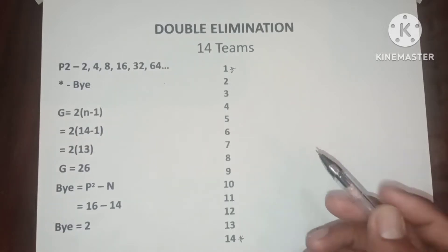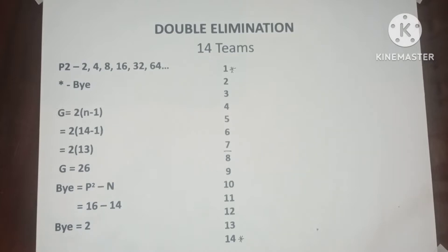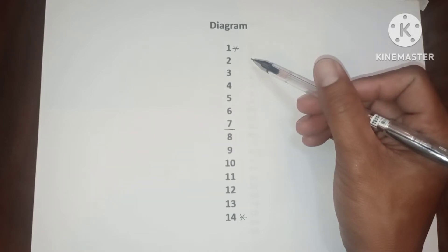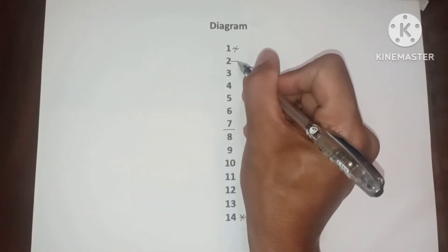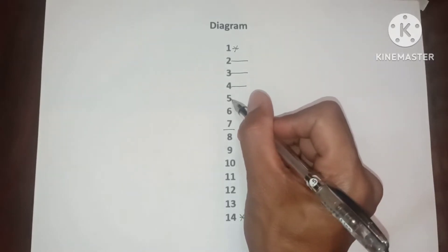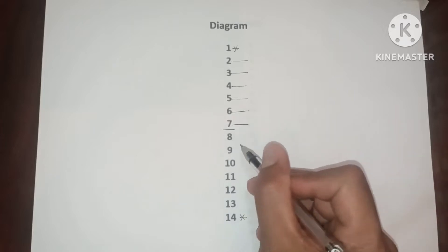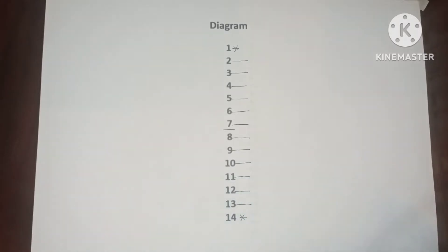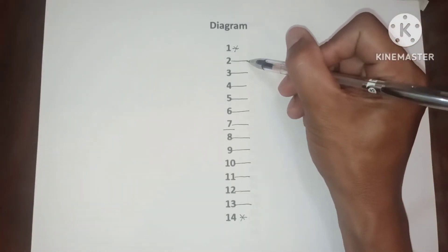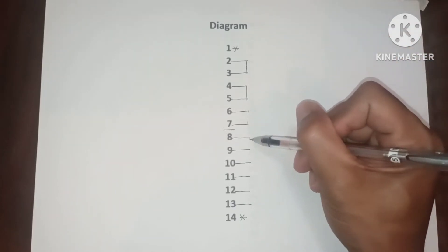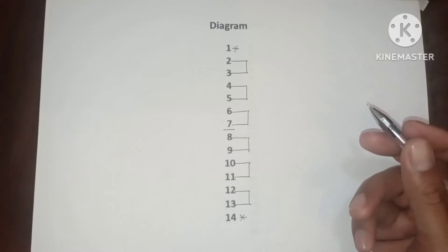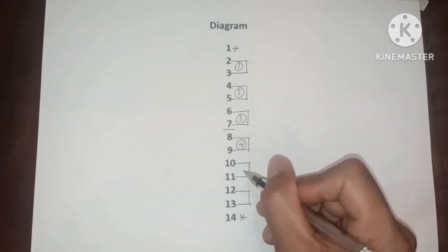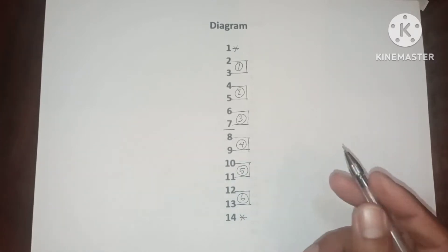We bracket it into 2 between 7 and 8. Now let's proceed to the diagram. Since we have two byes, we have 12 competing teams in the first round: one, two, three, four, five, six, seven, eight, nine, ten, eleven, twelve. Let us add the vertical line from the top, then the game numbers: one, two, three, four, five, six. Let us add the results.